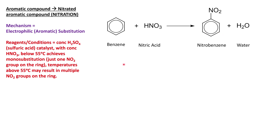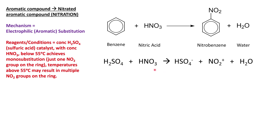Let's look at the mechanism. The first stage is rather odd — we have to write an equation. We take concentrated sulfuric acid catalyst and mix it with concentrated nitric acid. The nitric acid is not a catalyst; only the sulfuric acid is. This produces a hydrogen sulfate ion, a nitronium ion, and water. This nitronium ion is the electrophile in the electrophilic substitution.